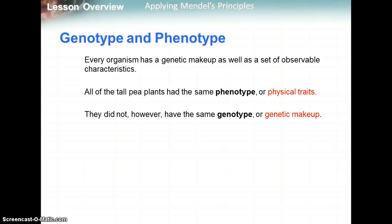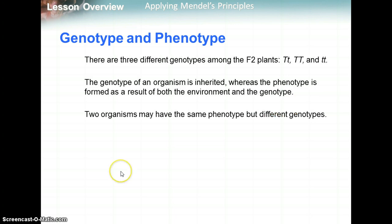Genotype and phenotype: phenotype is the physical traits, like tall or short plants. Genotype is the genetic makeup or allele combination — big T big T is homozygous dominant, big T little t is heterozygous, and little t little t is homozygous recessive. The genotype of an organism is inherited, whereas the phenotype is formed as a result of both the environment and the genotype. Two organisms may have the same phenotype but different genotypes.